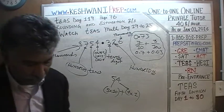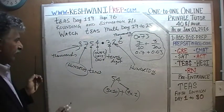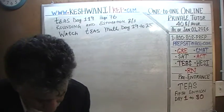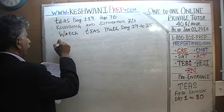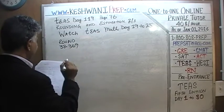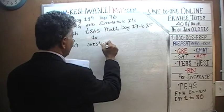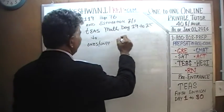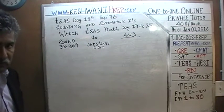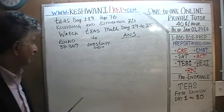Let's begin our process. Problem number 2 on page 76 is dealing with this concept. They are asking us to round things. It says: round 38.369 to the ones digit — sometimes they call it the ones digit, or sometimes the unit digit.